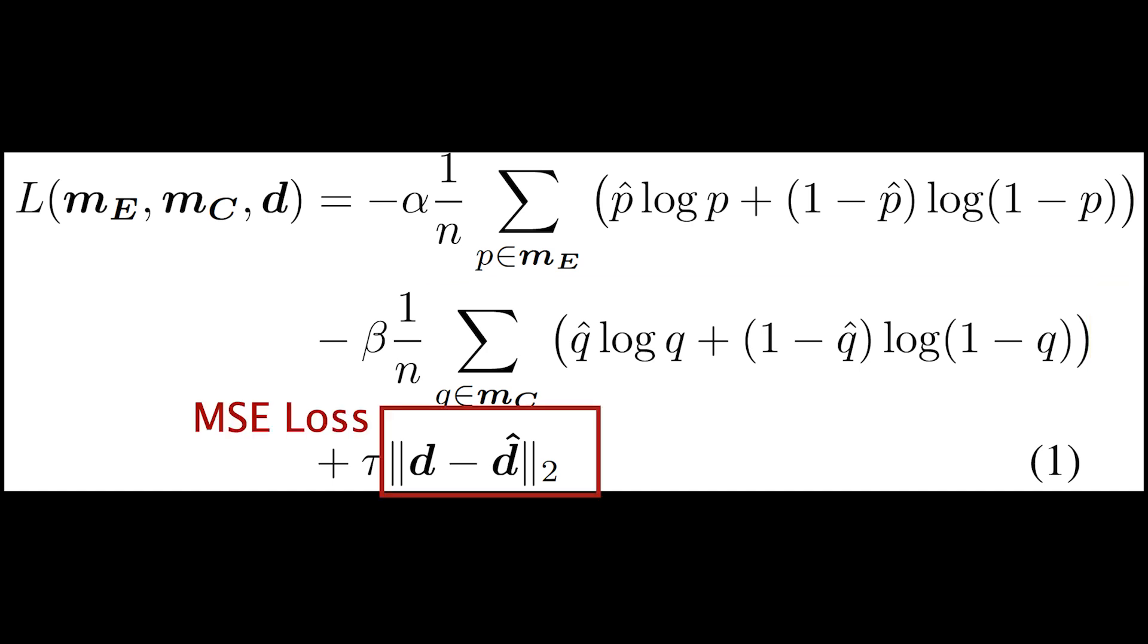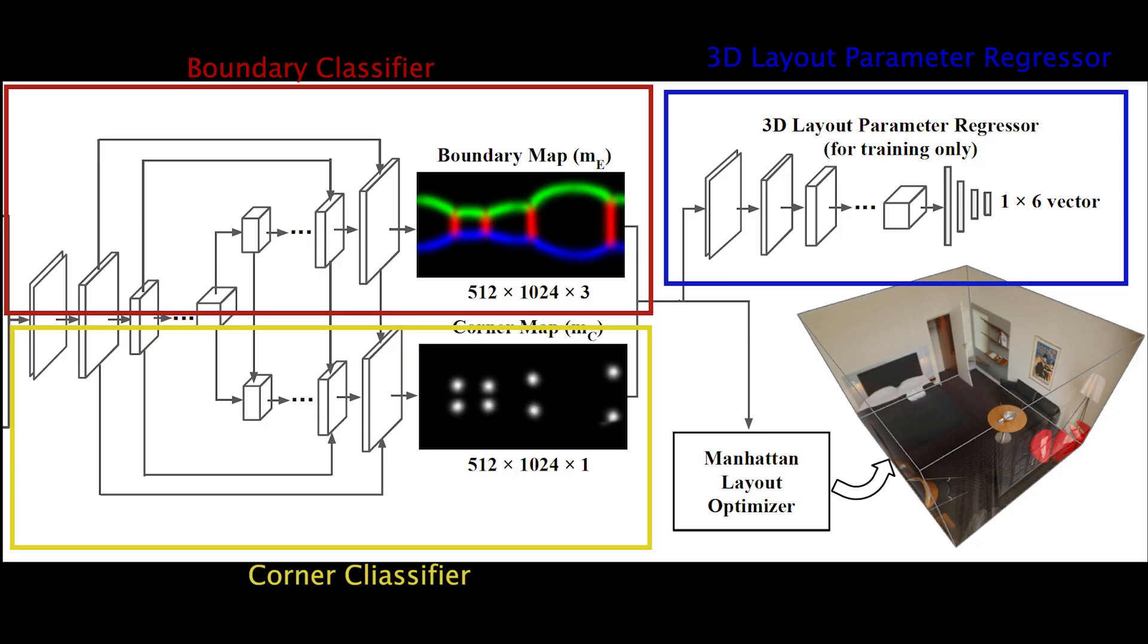Since the network is too complicated to train from random initialization, the paper proposes to train each regressor separately, and uses weights as the initialization for training the whole network together. It shows that this trick helps the network to converge a lot easier and faster.